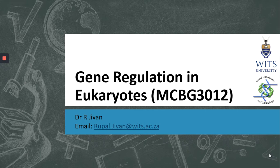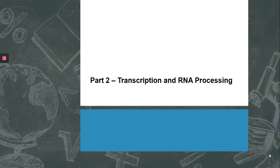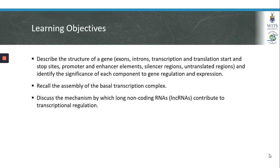Welcome to the next lecture in gene regulation in eukaryotes. We will now move on to part two on transcription and RNA processing. As this lecture is quite long, it will be split into two videos. We will describe the structure of a gene, look at transcription start and stop sites, promoter and enhancer elements, silencer regions, untranslated regions, and identify the significance of each component in gene regulation. We will then look at the assembly of the basal transcription complex and discuss briefly a mechanism by which long non-coding RNAs can contribute to transcriptional regulation.